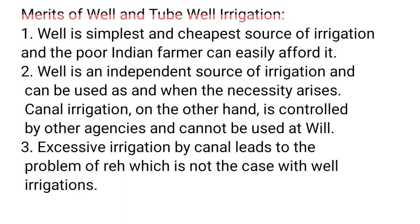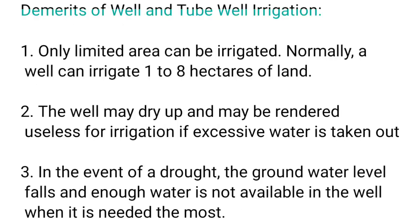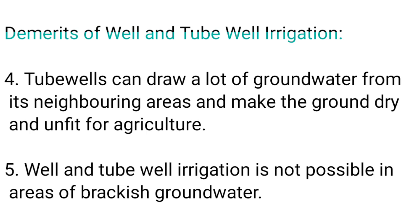Merits of well and tube well irrigation: it is an independent source of irrigation; excessive irrigation by canals leads to waterlogging, but well irrigation has no such problem; wells can be dug at any convenient place; fertilizers can be mixed with well water to supply extra fertility to the field; and no payment is required for its use. Demerits: it can irrigate only a small area; wells may dry up due to over-extraction; water may not be available during drought; excessive pumping can make the land unfit for agriculture; and well and tube well irrigation is not possible in areas with brackish (saline) groundwater.